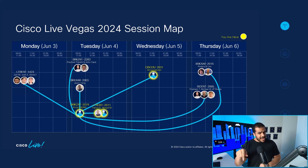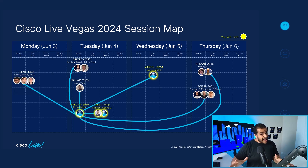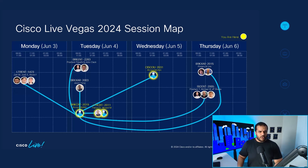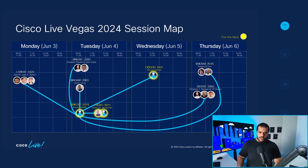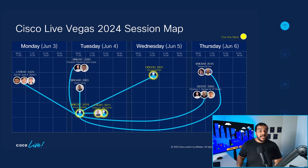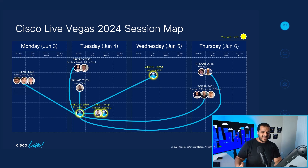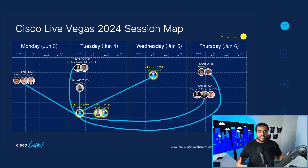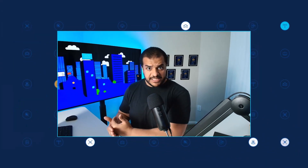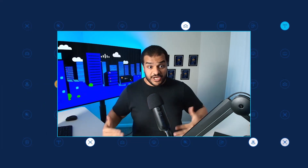Before we begin, don't forget to share, like, and subscribe. Here is the session map for Cisco Live Vegas 2024. It all begins on Monday, June 3rd, all the way through Thursday, June 6th — that's when the actual sessions run. There are lots of well-decorated engineers and architects who are going to be sharing their thoughts on multi-cloud sessions, whether from the practical perspective, the design perspective, or even the certification perspective. I'll be talking from the certification perspective.